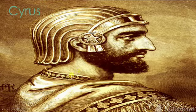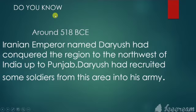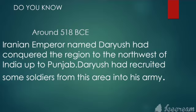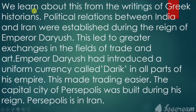Around 518 BCE, Iranian emperor Darius had conquered the region to the northwest of India up to Punjab. Darius had recruited some soldiers from this area into his army. Cyrus was a king with a vast empire in Iran that extended to the northwest of India up to Punjab. We learn about this from the writings of Greek historians.